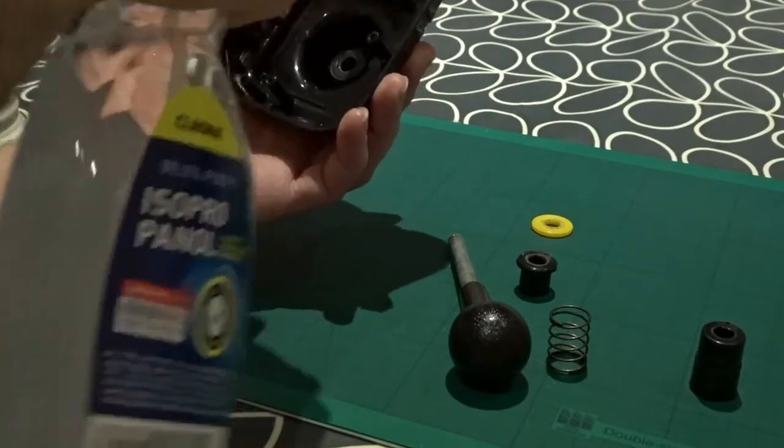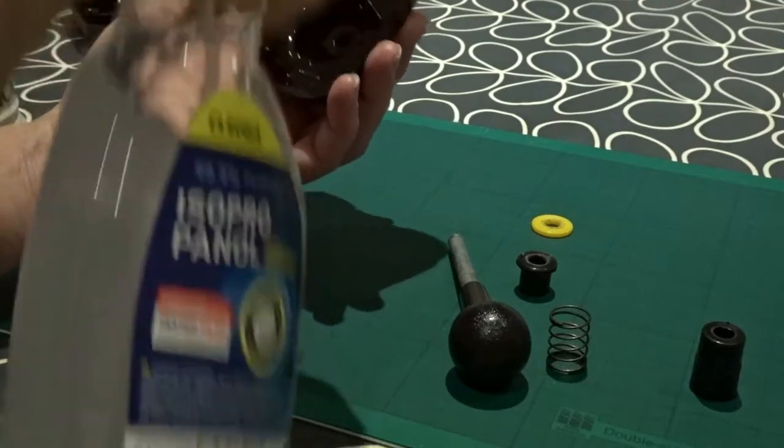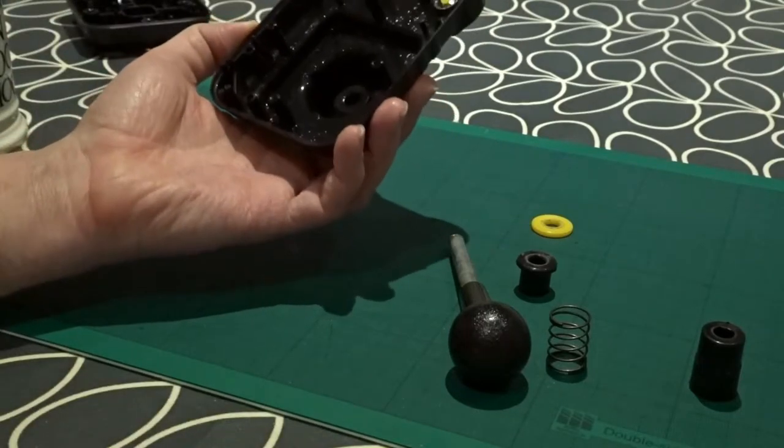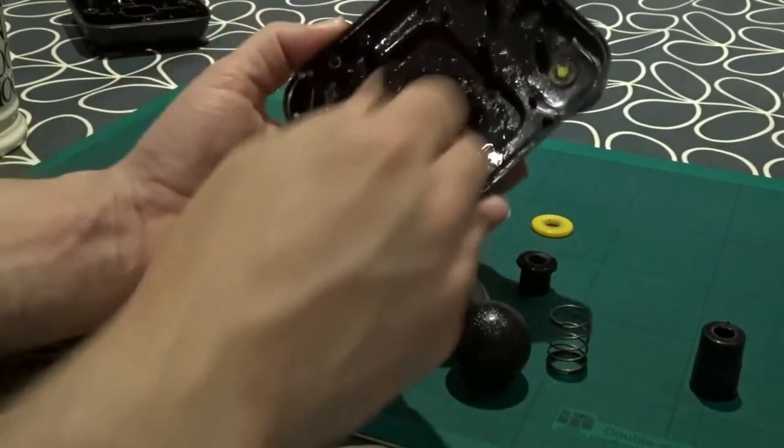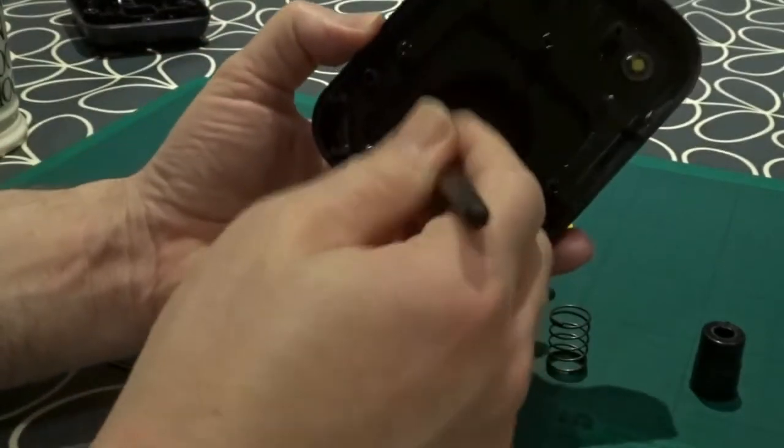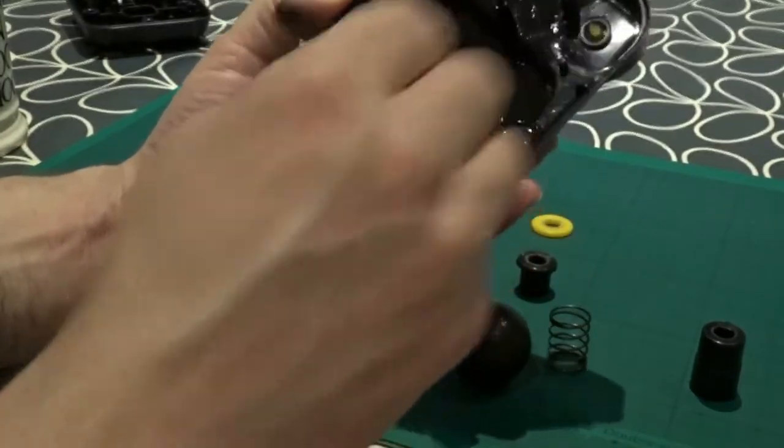So again let's spray a liberal coating of IPA in there. Being careful not to get it all over my hands. A good brush out in there. Get all the corners. Make sure it's all nice and clean and then I'll give that a wipe round as well.